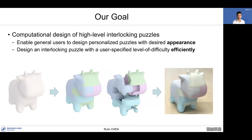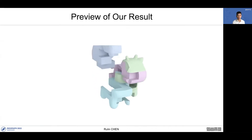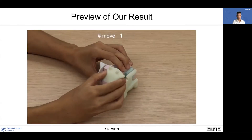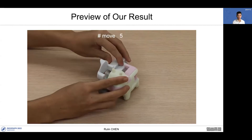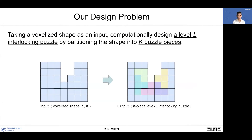Our goal is to propose a computational approach to design high-level interlocking puzzles, enabling general users to design personalized puzzles with desired appearance and a user-specified level of difficulty efficiently. Here's a preview of our project. A shape is given, the puzzle is generated, followed by a virtual disassembly process. We also fabricate the puzzle using a 3D color printer. Our design problem is: given a voxelized shape as input, computationally design a level-L interlocking puzzle by partitioning the shape into k puzzle pieces.